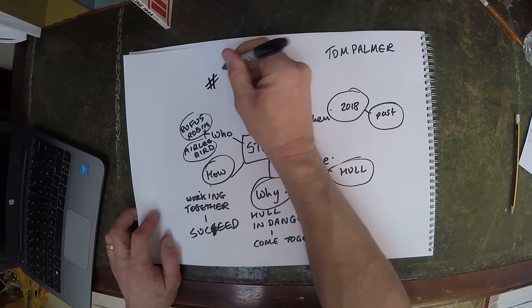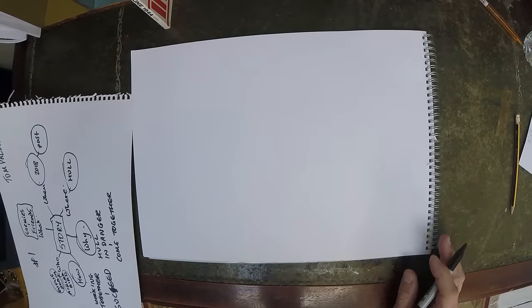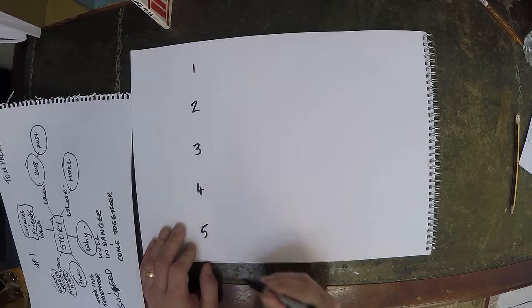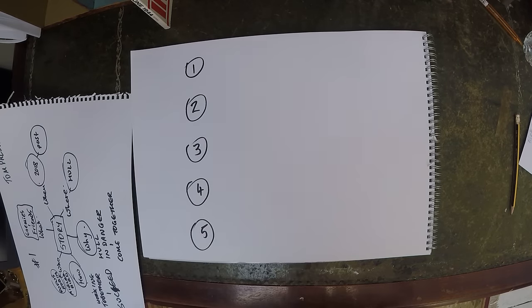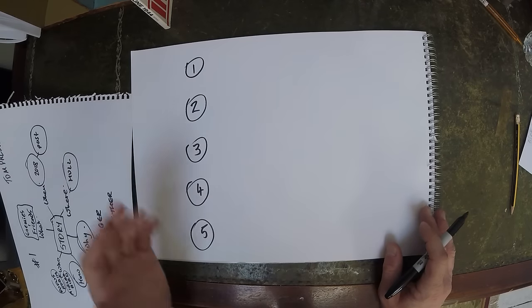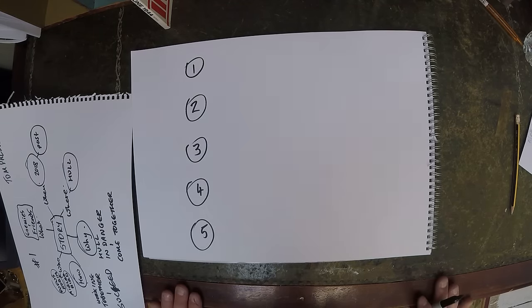Stage two: once I've done that, I need to break the story down into a number of parts. I like to do it in five parts. I found out once that Shakespeare — who was a really good storyteller — used to break his plays down into five acts. So when I'm starting a story I often try to break it into five, because if it works for him, why not learn from him?